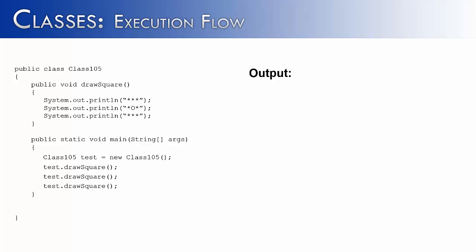Now that we have an understanding of how to create methods, what I want to look at next is how to utilize those methods. You see here we have two methods inside of this program class 105: our main method, which is going to call the other methods that we use, and then we have the drawSquare method, which is going to draw a square using asterisks and an O on the screen.